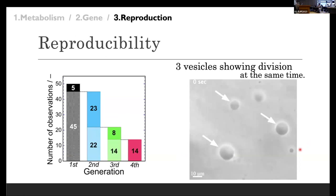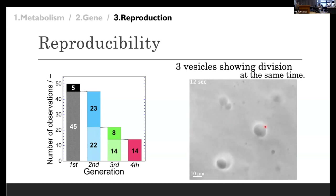I will talk about the reproducibility. I performed 50 experiments, and 40 vesicles reached to the fourth generation — that is the production of great-granddaughter vesicles. This movie represents three vesicles under the supply of food molecules. These three vesicles show growth and division at almost the same time. This means that under the same experimental conditions, the same result is obtained.